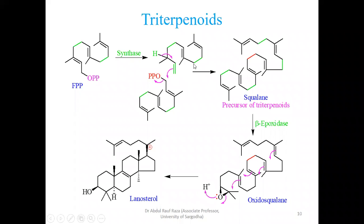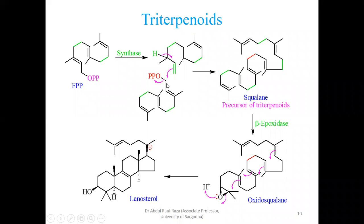In this case, the unit that was an acceptor is converted into a donor. This electron-deficient carbon and this electron-rich carbon make a bond — I have presented this bond in red. The rest of the bonds are shown similarly. Now you can see this molecule is commonly called squalene, the precursor of triterpenoids.